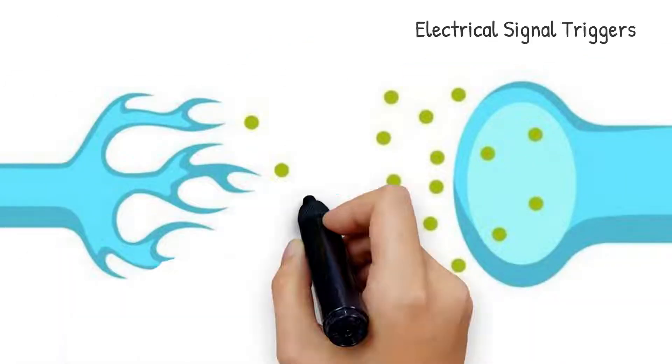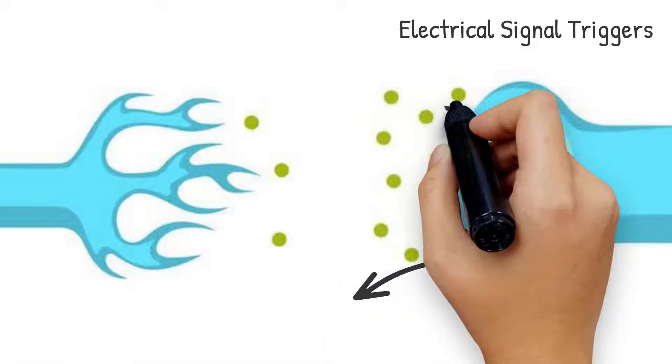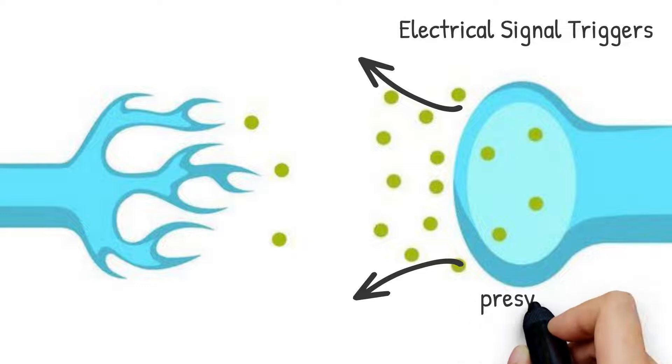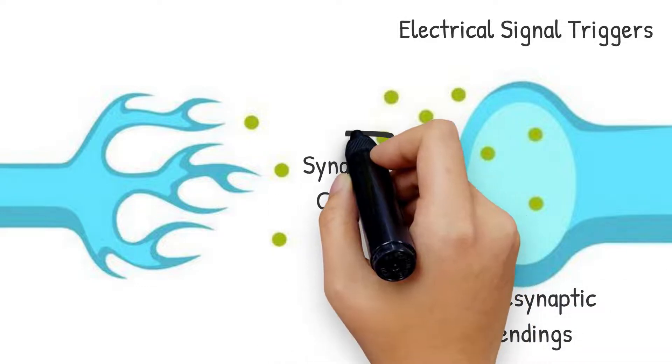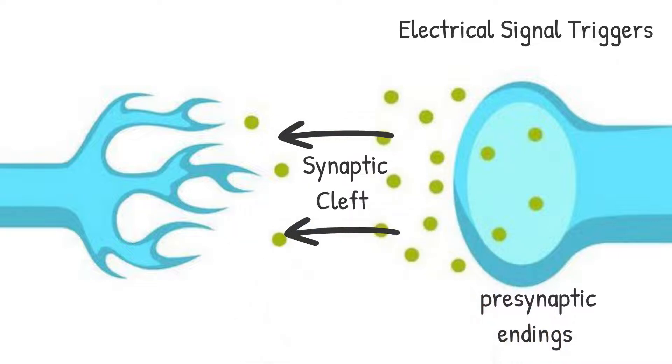When a nerve impulse or electrical signal triggers the release of neurotransmitters from the pre-synaptic endings, these chemicals are released into the synaptic cleft. The neurotransmitters then disperse across the synaptic cleft and bind themselves to specialized receptors of the post-synaptic neurons.